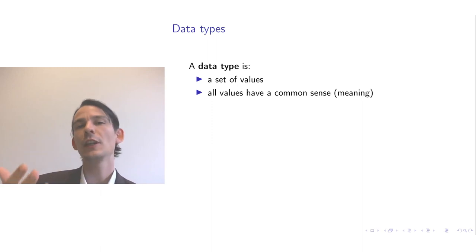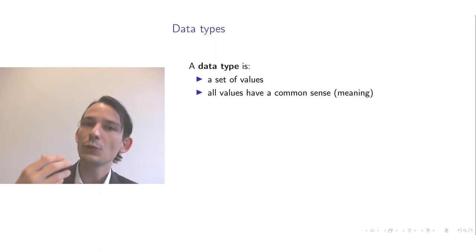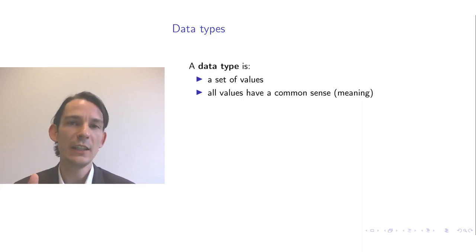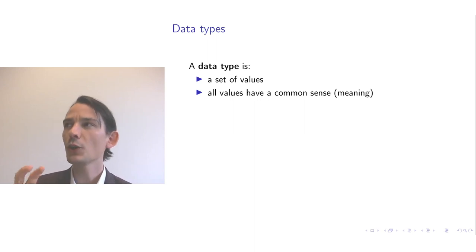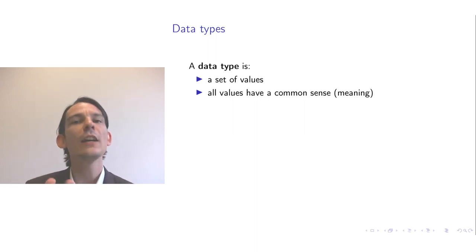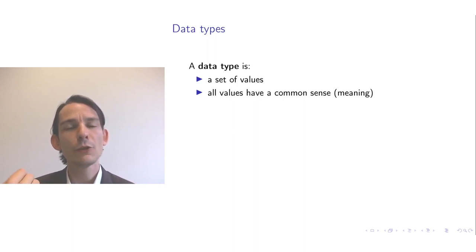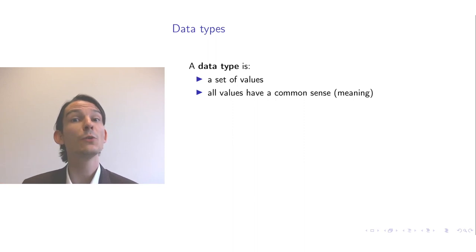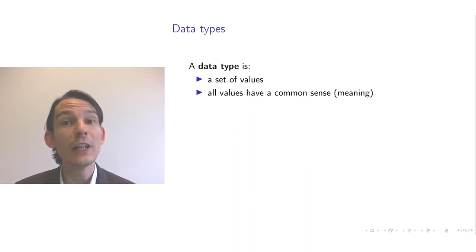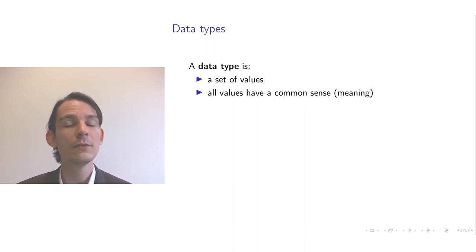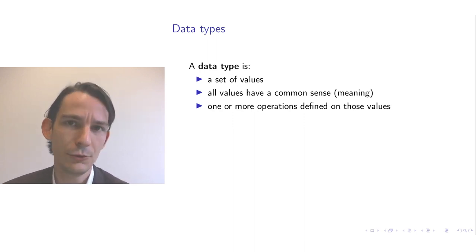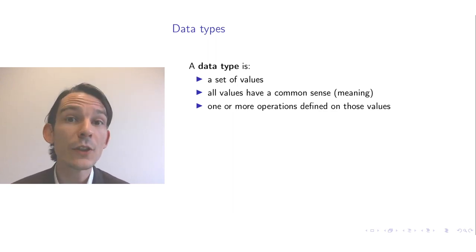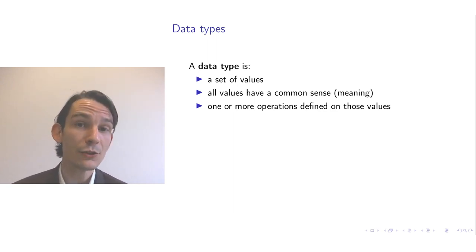This set of values has something in common, namely that you want them to have similar meaning. For instance, you could have a data type that represents the day of the week. Monday and Tuesday are different values, but what they have in common is that they are both days of the week. A data type is not only the set of values that share a common meaning — we often also want to define operations on those values.